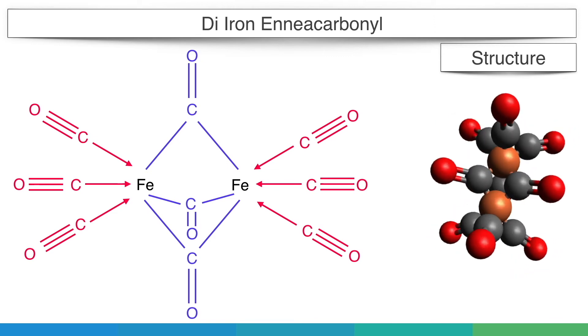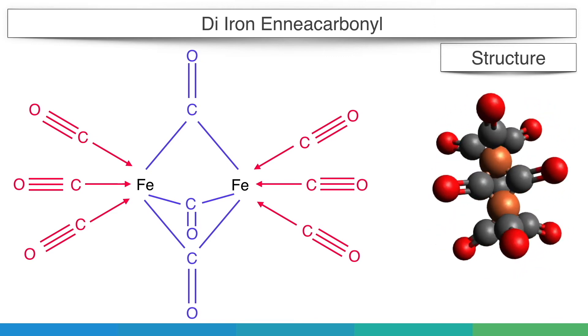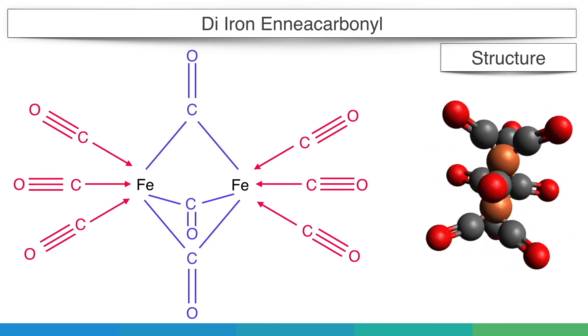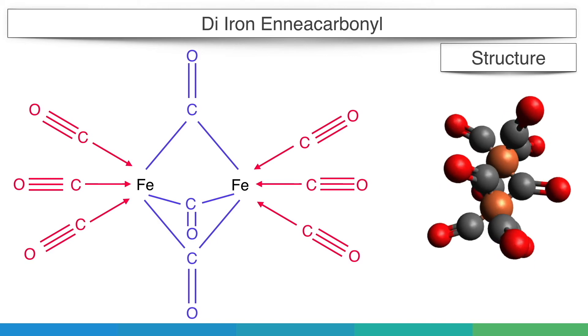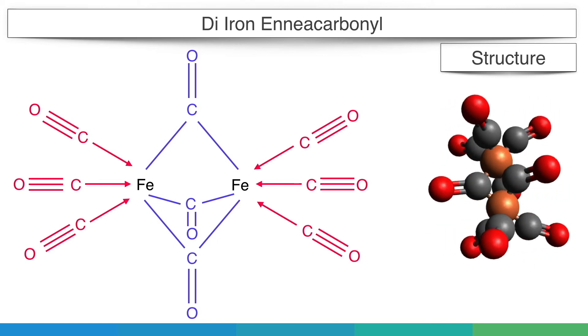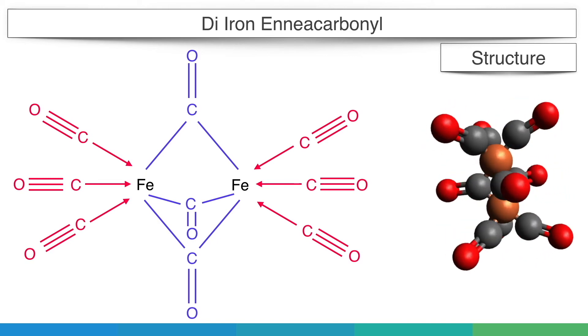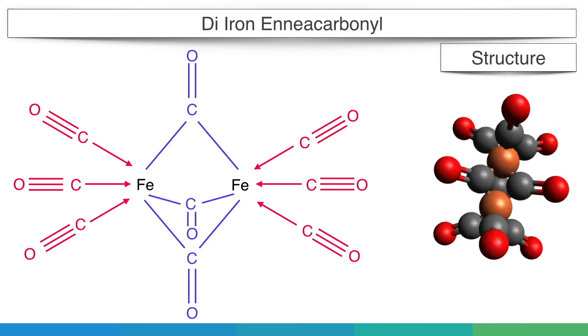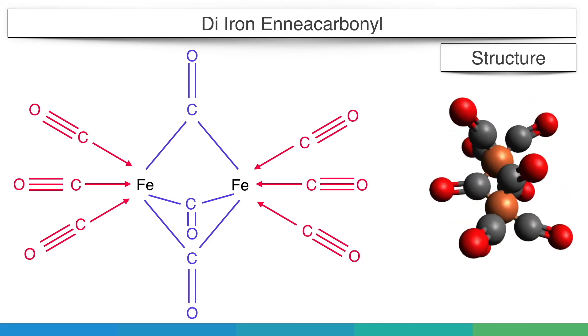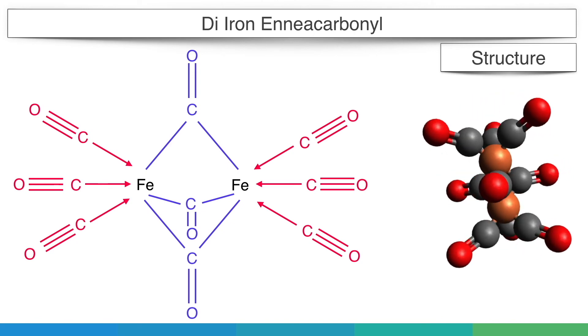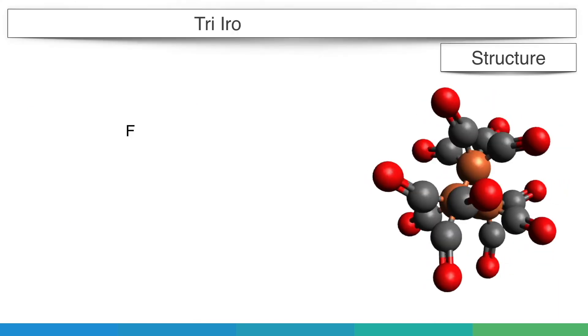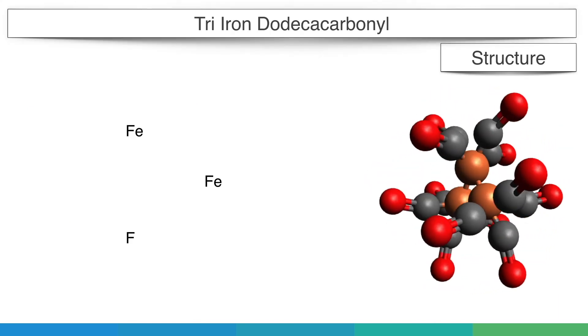Each iron atom is linked to three terminal and three bridge carbonyl groups. Each terminal carbonyl group is connected to the metal through normal sigma-dative bond. That means each carbonyl donates a lone pair of electrons to the metal, as observed in mononuclear carbonyls. But each bridge carbonyl group is linked to two metal atoms through single covalent bonds. That is, each carbonyl group gives only one electron to each metal atom.